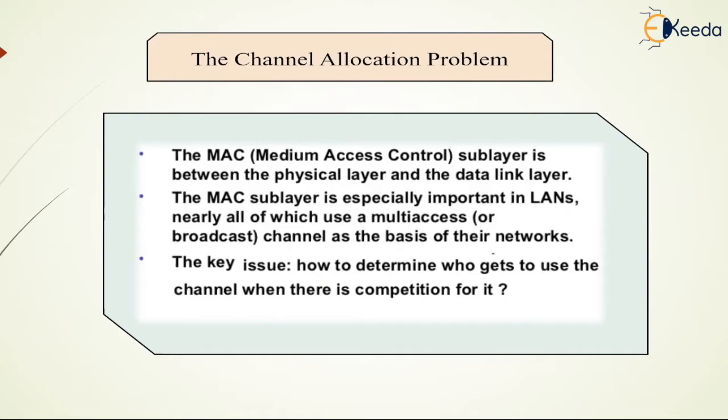Networks can be divided into two categories: those using point-to-point connections and those using broadcast channels. In any broadcast network, the key issue is to determine who gets to use the channel when there is competition among the users about the use of channel.